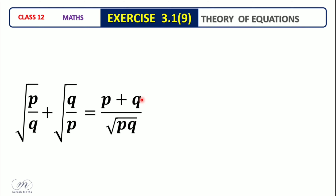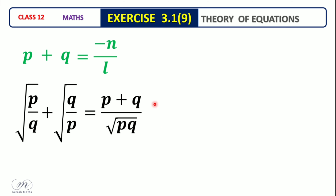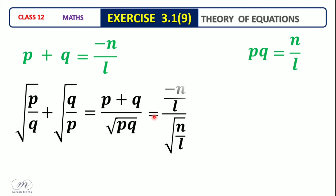Sum of the roots is minus n by L, and product of the roots is n by L. We substitute the numerator and denominator: P plus Q value is minus n by L, and P into Q value is n by L.